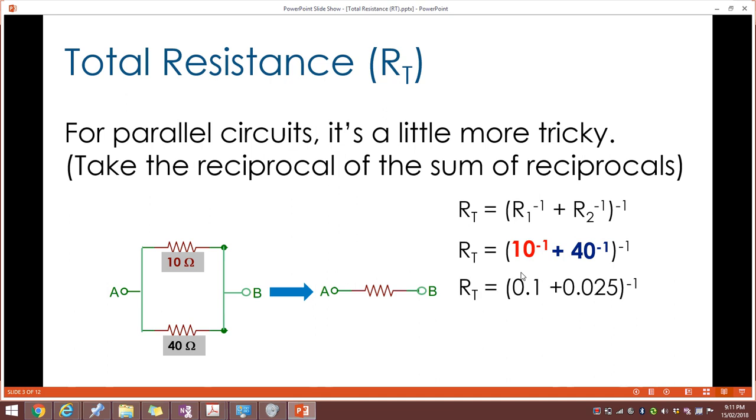Which gives us a total resistance or effective resistance of eight. So a 10 ohm and a 40 ohm placed in parallel can be replaced or represented by a single 8 ohm resistor as its resistance, that is the total or effective resistance.